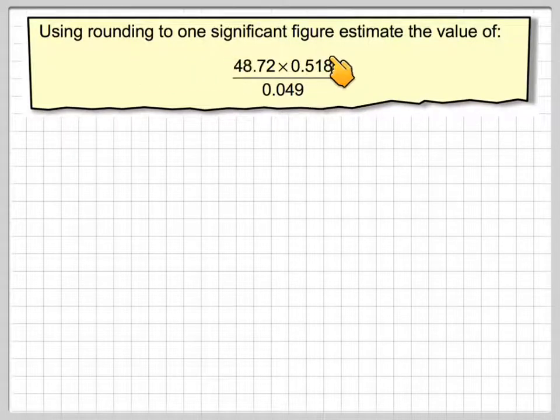Using rounding to one significant figure, estimate the value of 48.72 times 0.518 divided by 0.049.